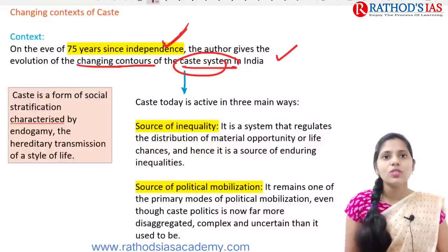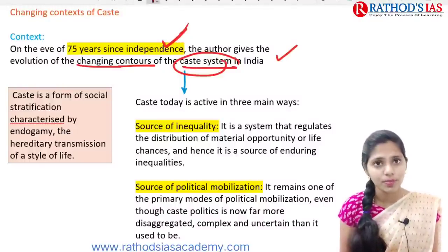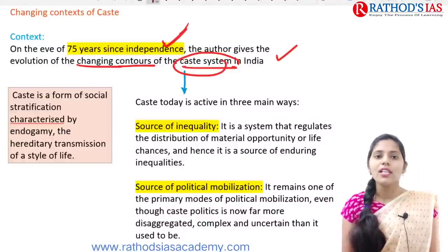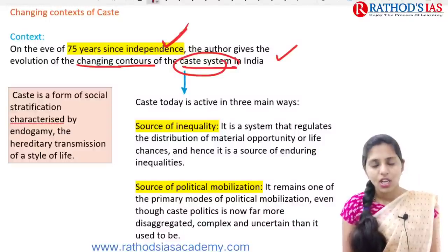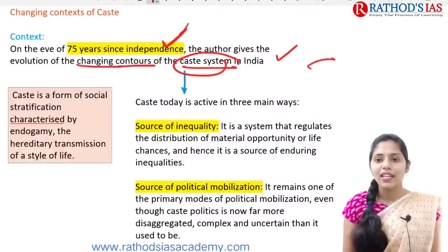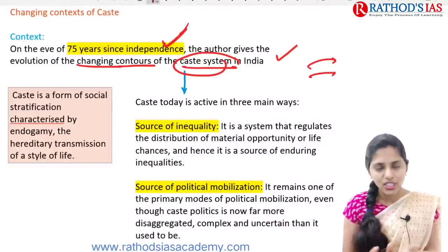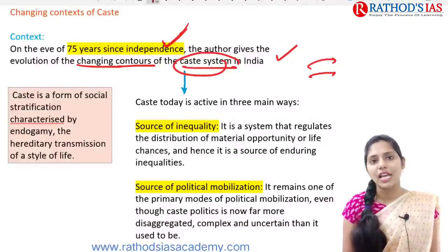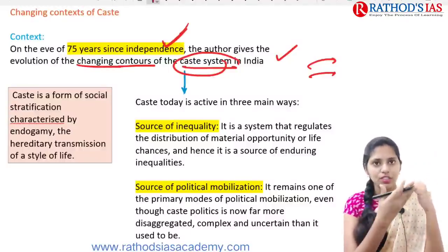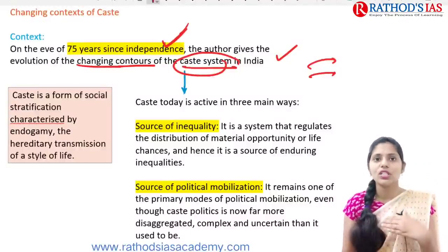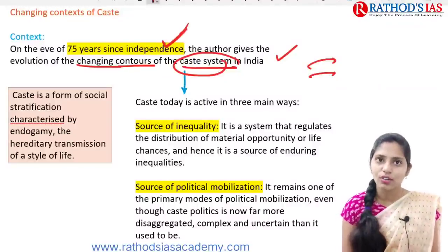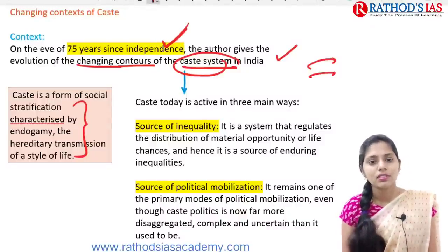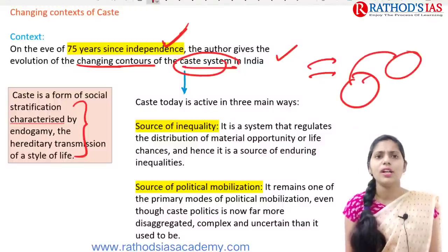Caste is a form of social stratification characterized by endogamy — marriage happening within the same caste group — and hereditary transmission of the style of life. What is seen in the first generation can be seen in the second, third, and fourth generation. Endogamy means marriage within the group; going for marriage with a different group is called exogamy.